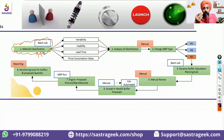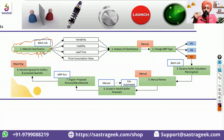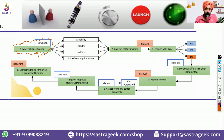The initial 15-20 materials you will get verbally from the supply chain team. But to decide which other materials should be planned as D1, VB, or PD, you should check based on material variability, material usability, lead time, and price consumption value — how much value that material carries.